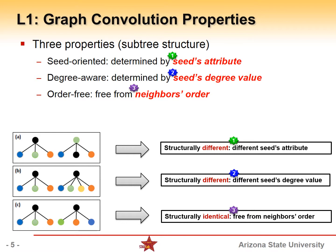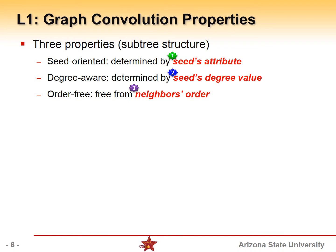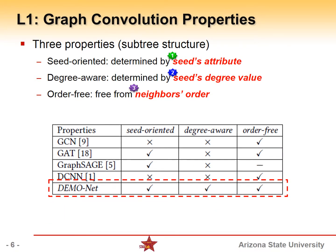Furthermore, we found that most of the existing graph neural networks, like graph convolutional network, graph attention network, graph SAGE, do not consider all of these graph convolution properties.